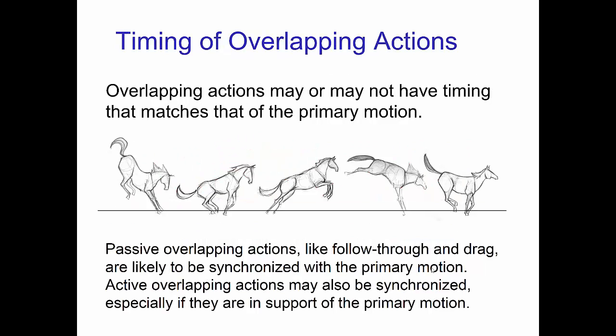Now the timing of the overlapping actions may or may not have similar timing that matches the timing of the primary motion. Passive overlapping actions like follow through and drag are likely to be synchronized with the primary motion. On the other hand, active overlapping actions may also be synchronized, especially if they're in support of the primary motion, but not necessarily.